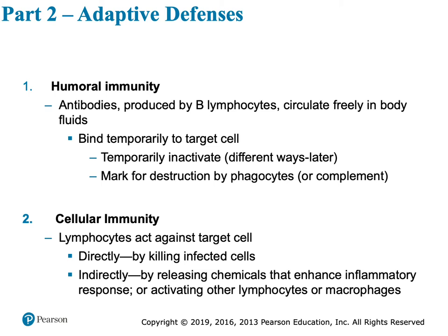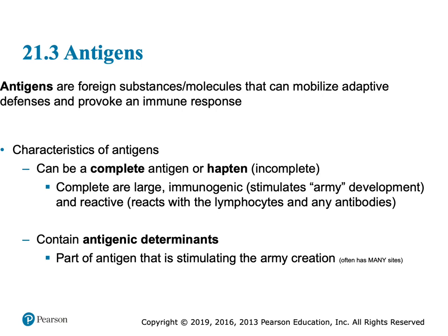Cellular immunity uses T cells that go against a target cell. Some of them can directly kill infected cells. Some of them help by releasing cytokines — chemicals that make a response. They enhance the inflammatory response and activate maybe some other lymphocytes or call upon macrophages to come and do their job.